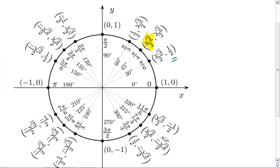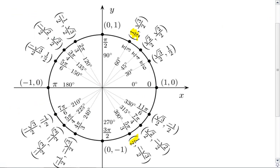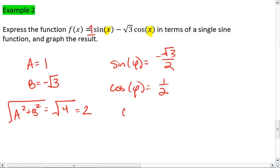We go to our unit circle. If cosine is 1 over 2, but sine is negative root 3 over 2, this happens at 5 pi thirds. So phi is 5 pi thirds.